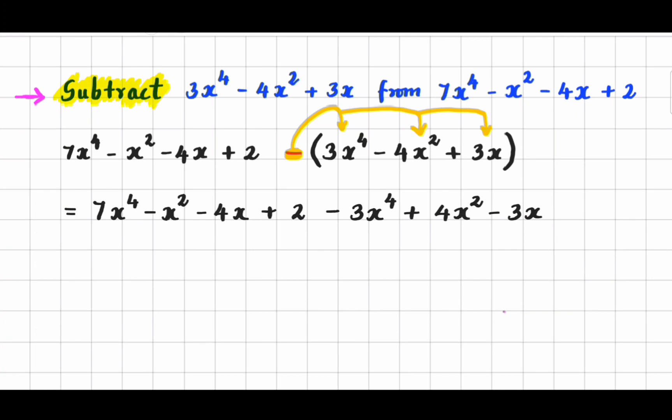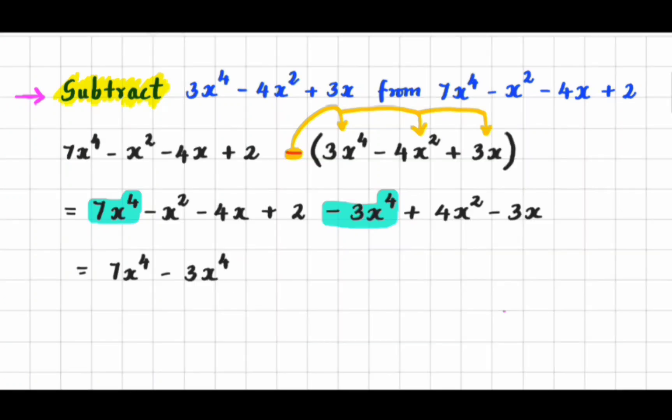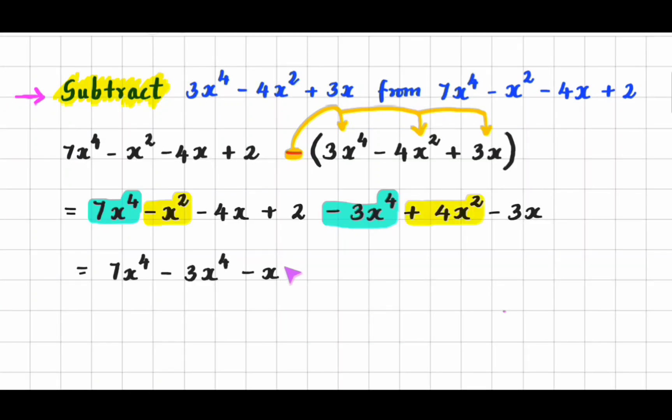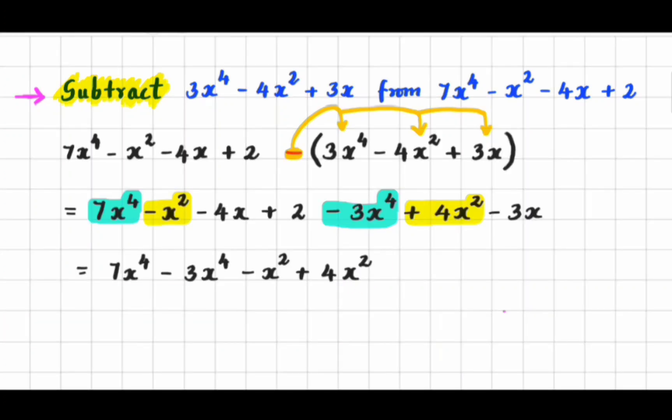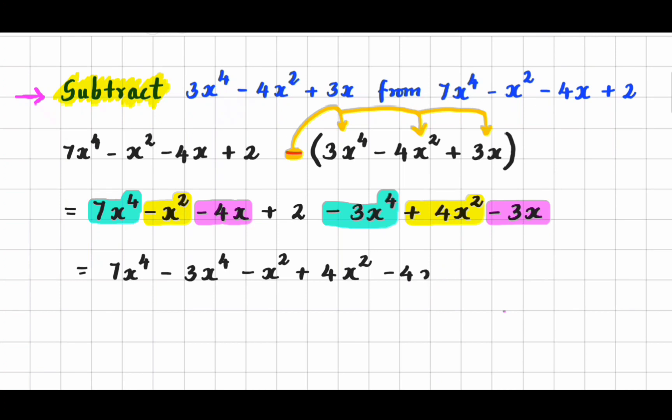Now let's group the like terms. 7x to the power 4 minus 3x to the power 4, minus x squared plus 4x squared, minus 4x minus 3x, plus 2.